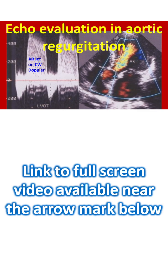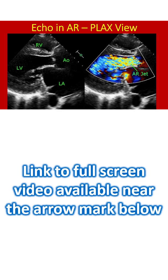Echocardiographic evaluation of aortic regurgitation demonstrated through multiple images. The echocardiogram in parasternal long axis view shows a dilated left ventricle, left atrium, aorta, and a small portion of the right ventricle, which is usually the outflow region.